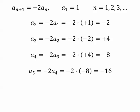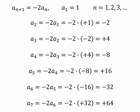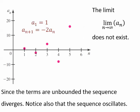The next term should be positive 16. A sub 5 equals positive 16. A sub 6 would be negative 32, and a sub 7 would be positive 64. So what's happening? The terms alternate positive, negative, positive, negative, and the magnitudes are getting larger and larger. The terms are unbounded, and since the terms are unbounded, the sequence diverges. Note also that the sequence oscillates.